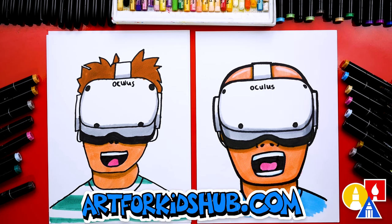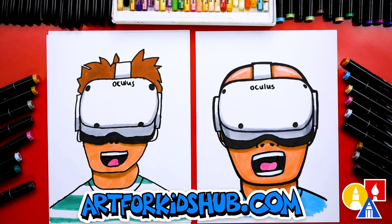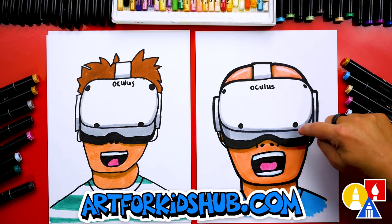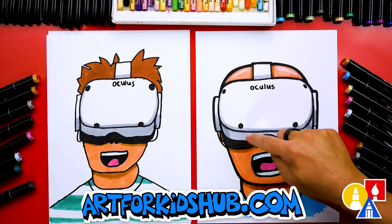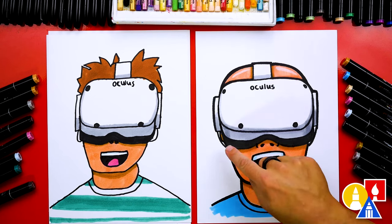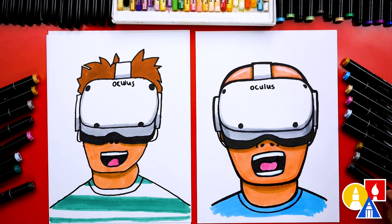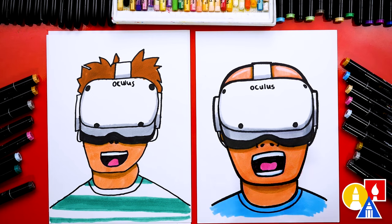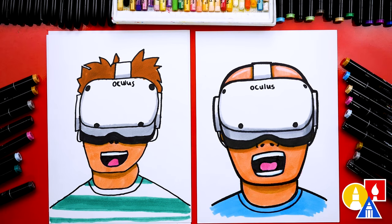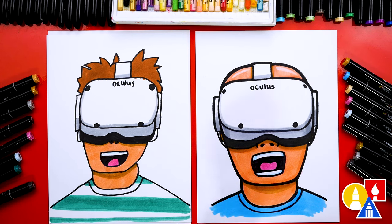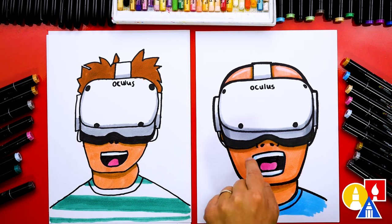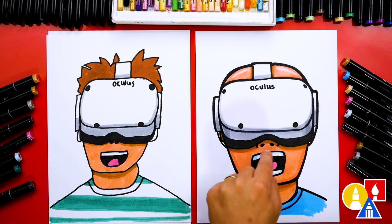We used our Art For Kids Hub Markers to color our drawings. And if you have the same set, you can use the same colors. We used CG1 as a shadow, a light gray for the bottom of the Oculus. And then what color did we use for the padding? CG9. That's a really dark gray, it almost looks black. Then we used a light blue for the shading on the teeth, and that's 182. And for the tongue, we used 341. And I also love your green stripes. It looks like the shirt you're wearing right now, and that's 57 green. I used 66 blue for my shirt. We used 97 for the skin tone and also 100 for the little shadow underneath the Oculus headset.